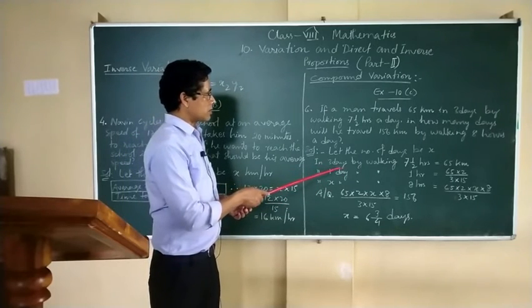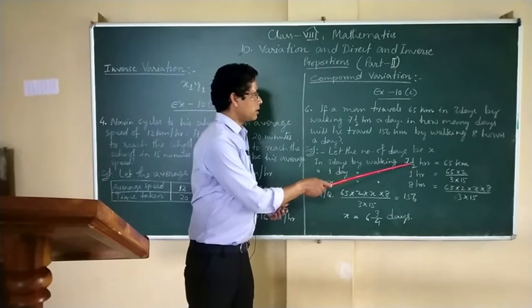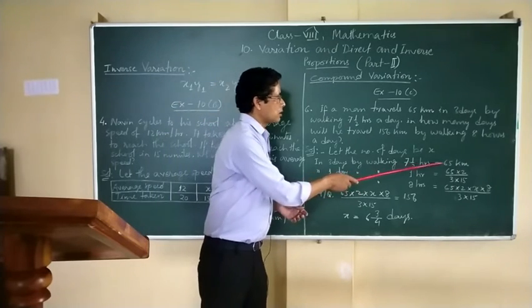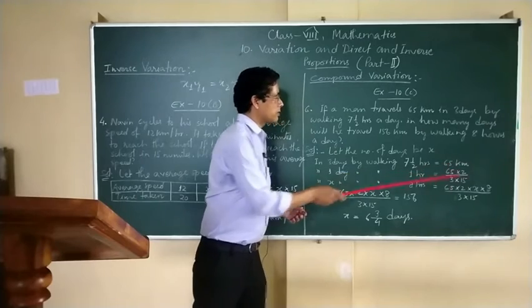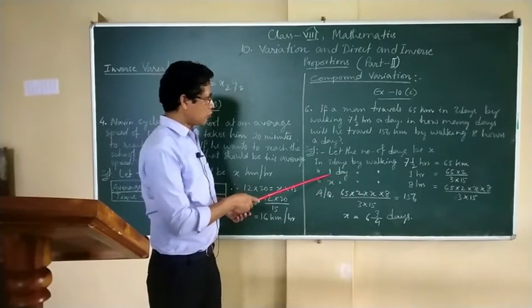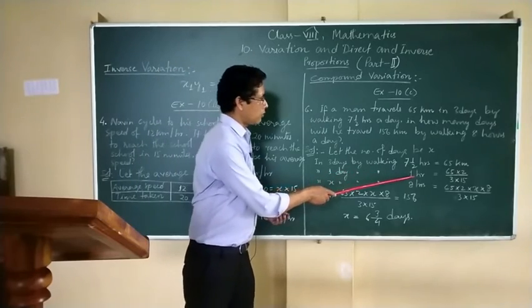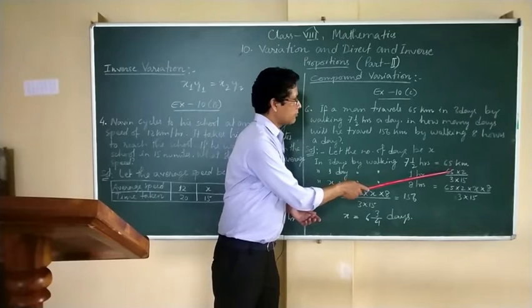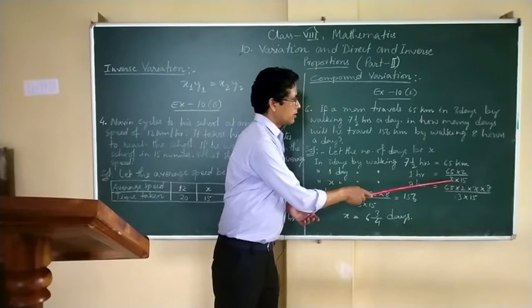In 3 days, by walking 7.5 hours, he covered a distance of 65 km. Then it means in 1 day, by walking 1 hour, how much distance will he cover? He will cover 65 into 2 by 3 into 15.